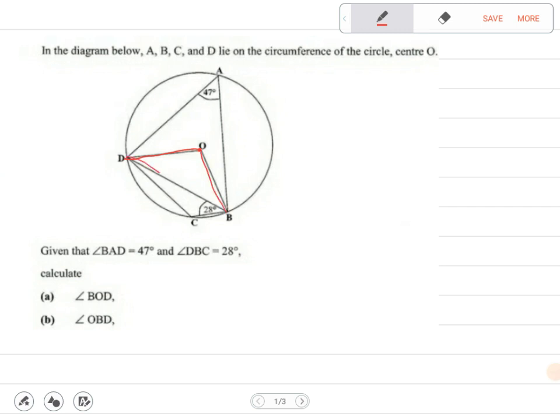The next one is we are forming another triangle there, so we have triangles inside. Now given that there's 47 degrees and 28 degrees here, how can we find angle BOD? This angle. You can only find this angle because this is a center.